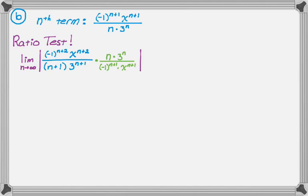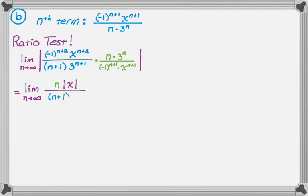The absolute value takes care of the negative one to any power. We have x to the n plus two over x to the n plus one, which is just the absolute value of x, since (n+2) minus (n+1) equals one. Bringing out n and n plus one — since we're going to infinity they're positive — and three to the n over three to the n plus one leaves a three in the denominator. The limit as n approaches infinity of n over n plus one is just one, so we're left with absolute value of x over three.